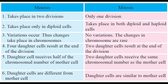In meiosis there are two divisions — one meiotic and one mitotic — while in mitosis only one division takes place. Meiosis produces cells with variation due to crossing-over, whereas in mitosis no variations occur and the chromosome number stays the same. At the end of meiosis, four daughter cells are formed; at the end of mitosis, only two daughter cells are formed. In meiosis, the chromosome number is halved from the mother cell, while in mitosis it remains the same.